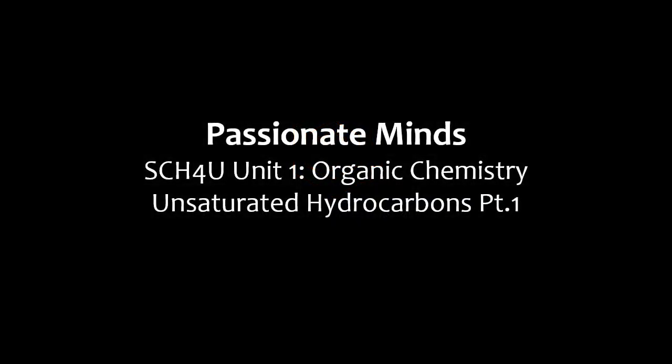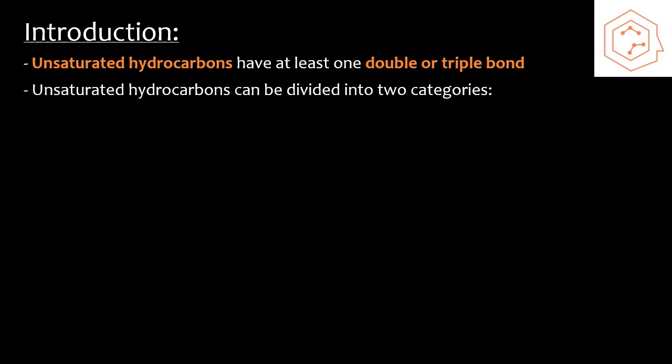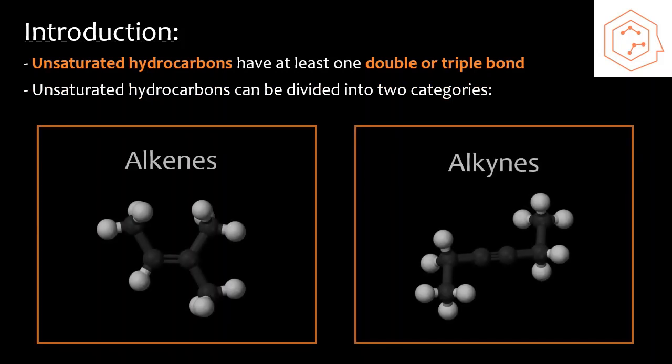Today we're continuing with our organic chemistry unit, covering unsaturated hydrocarbons, part one. Previously we discussed saturated hydrocarbons that only consist of single bonds between atoms. Now we're going to introduce unsaturated hydrocarbons. Unsaturated hydrocarbons have at least one double or triple bond — in other terms, the molecule is not bonded to the maximum number of hydrogens possible.